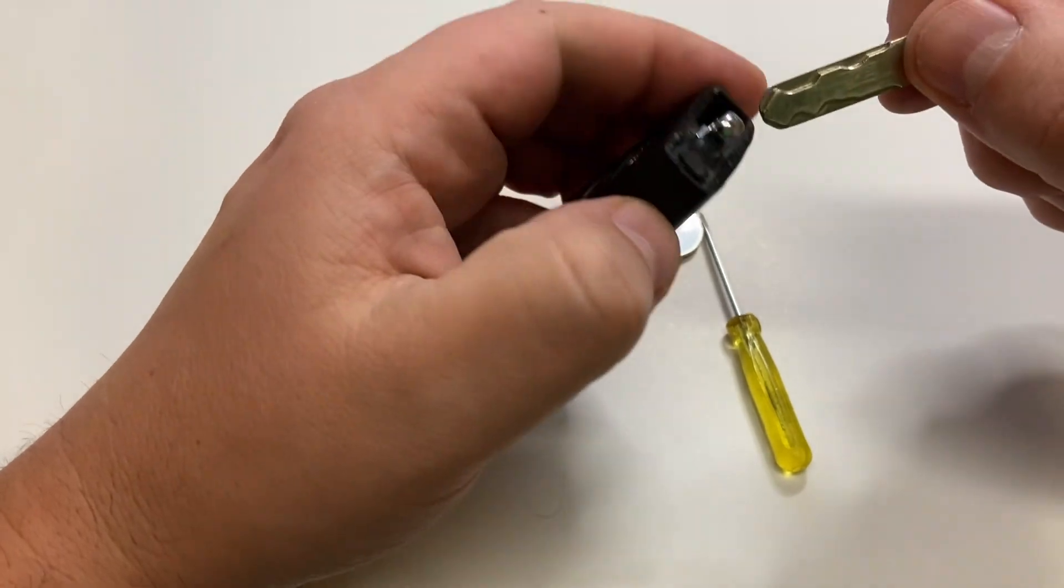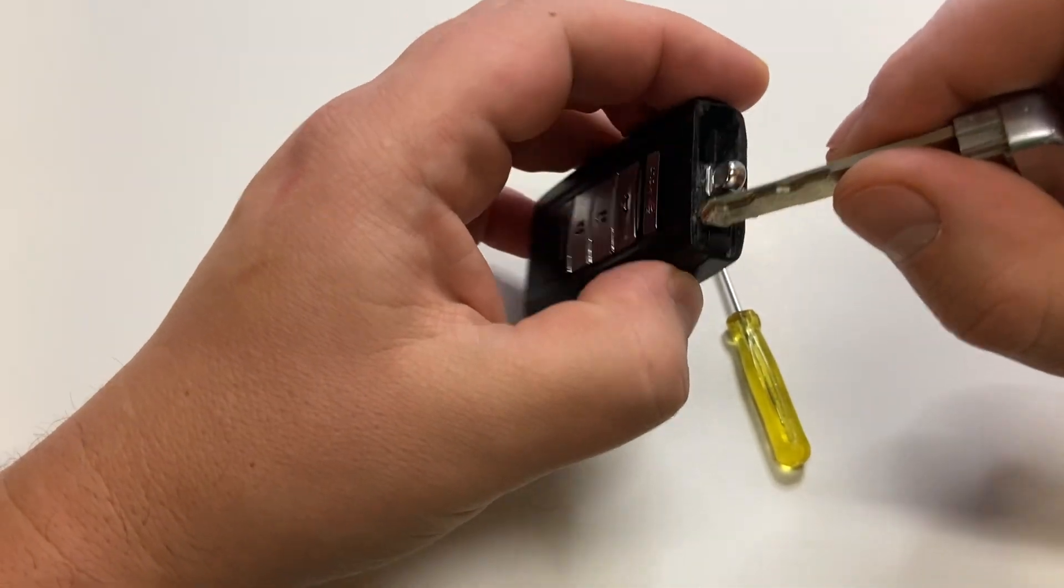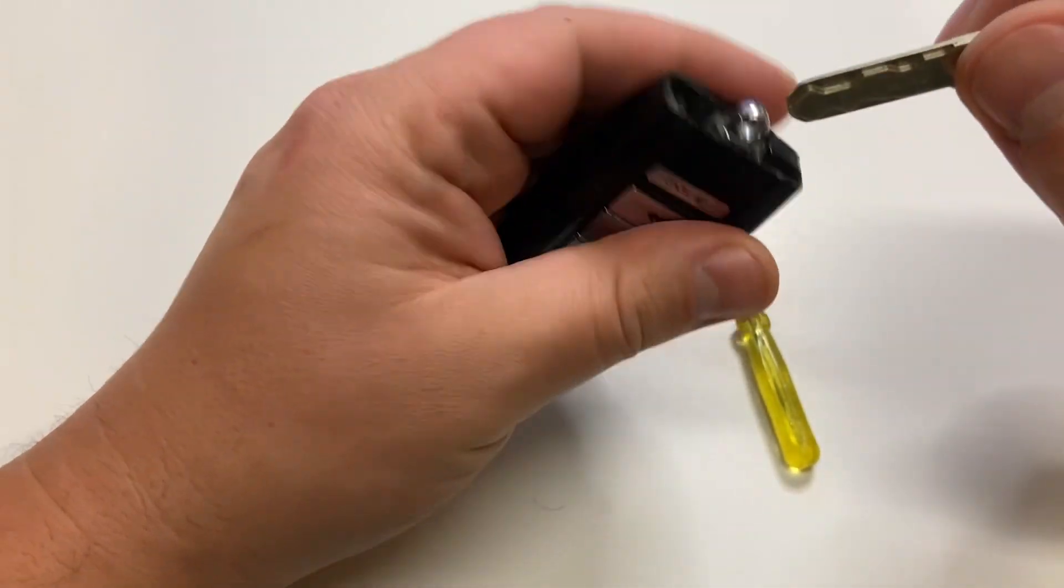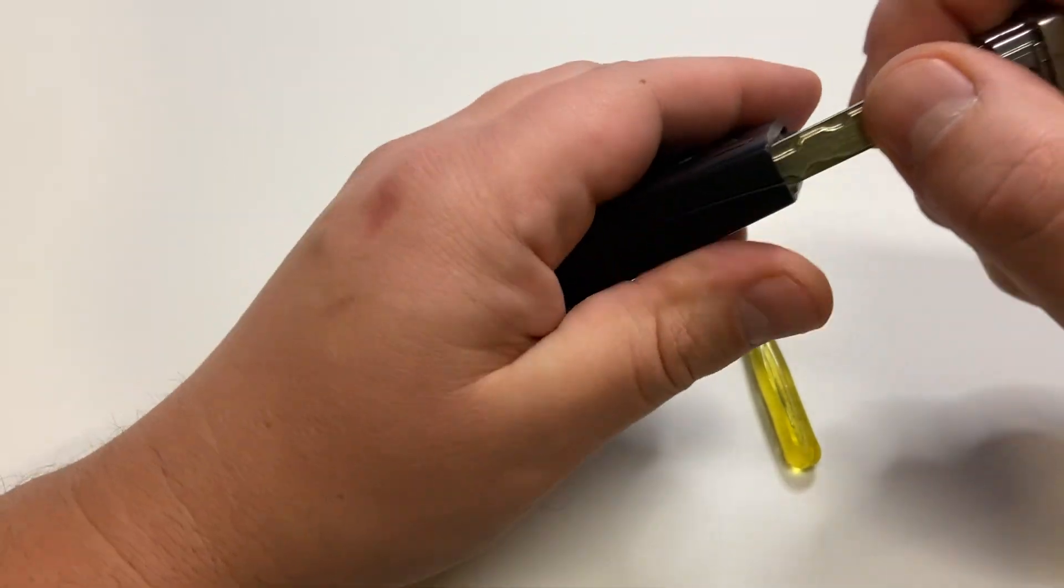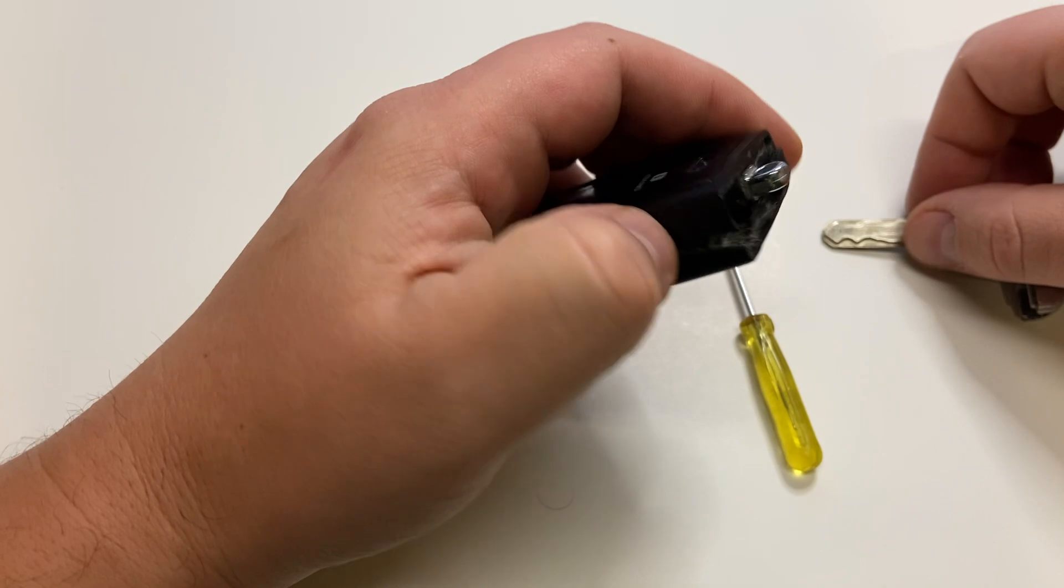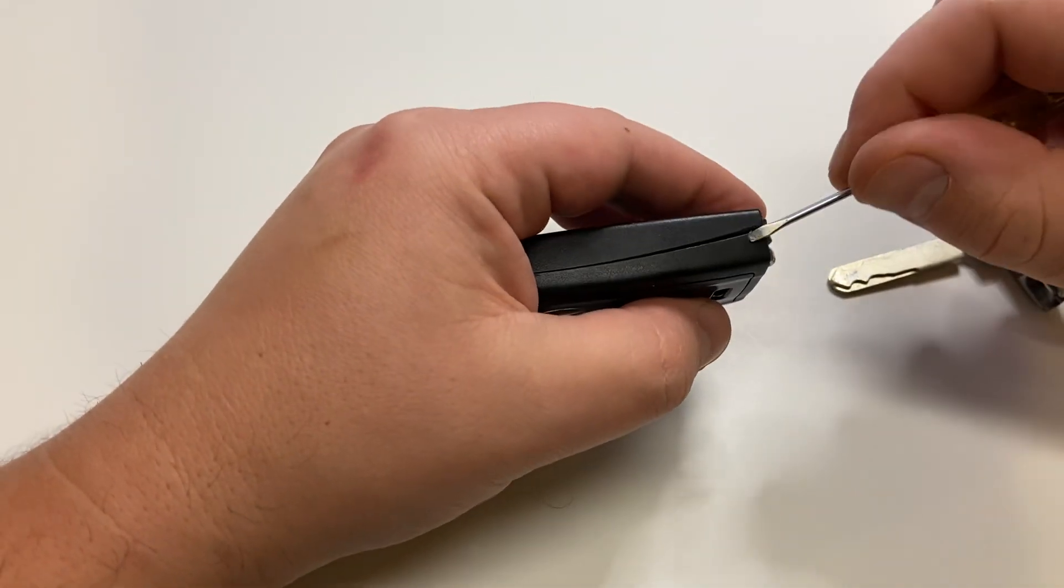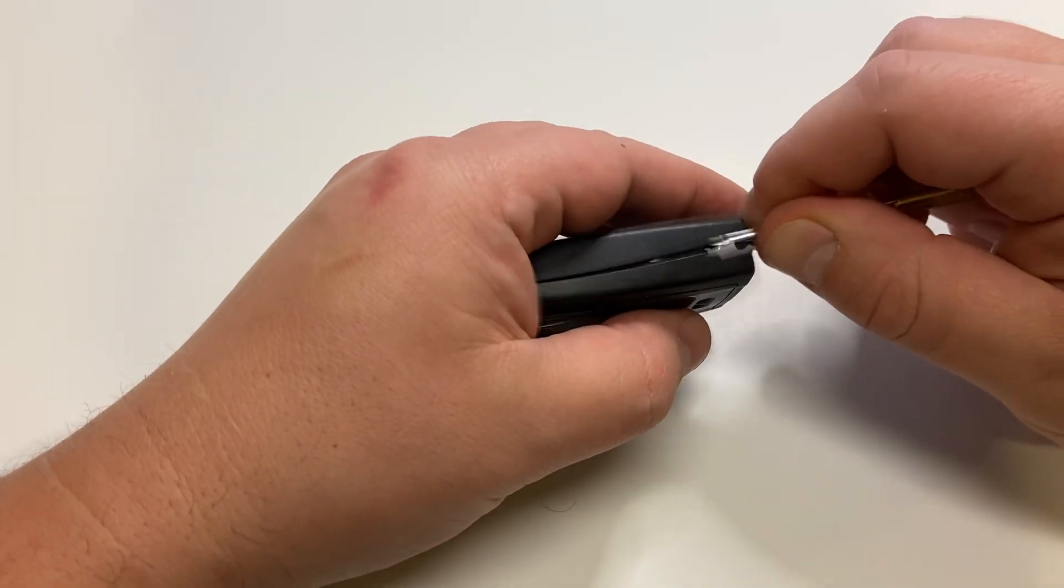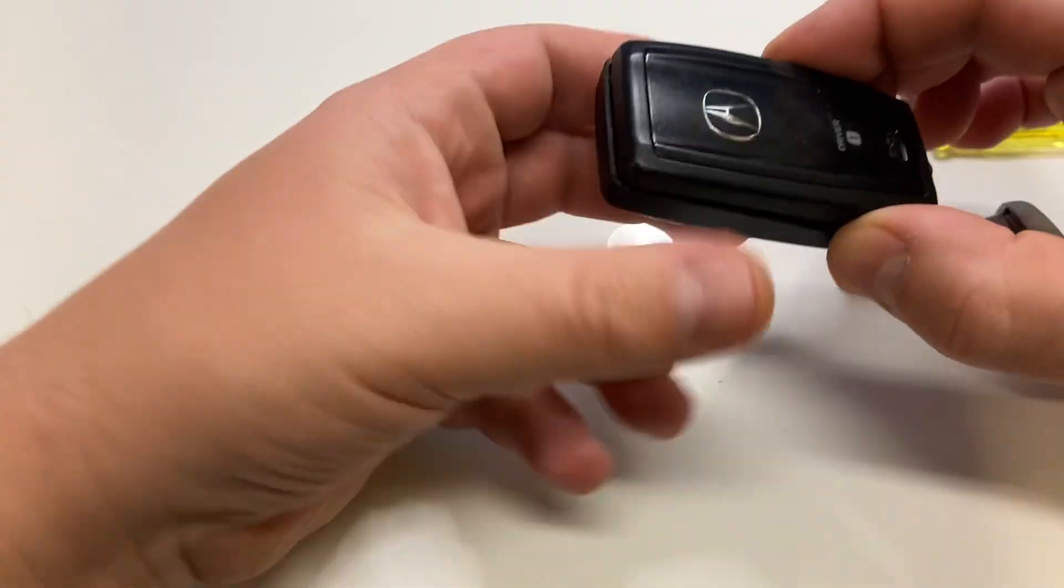The way I like to do it is put the emergency key right here between and lift the wrap a little bit so this side will open up. On this side, I just use a small screwdriver to pry it open. And the case comes open.